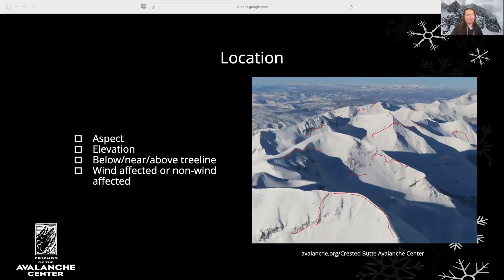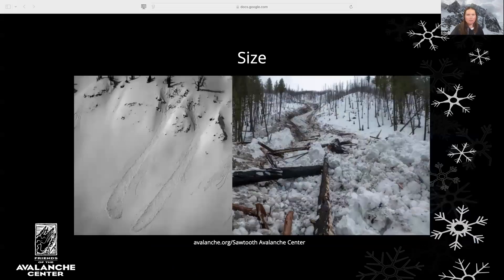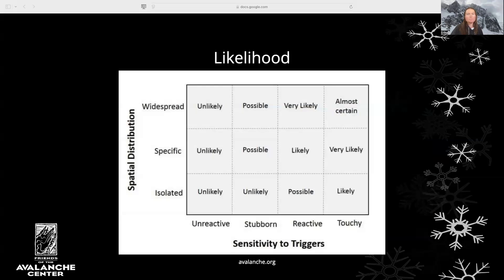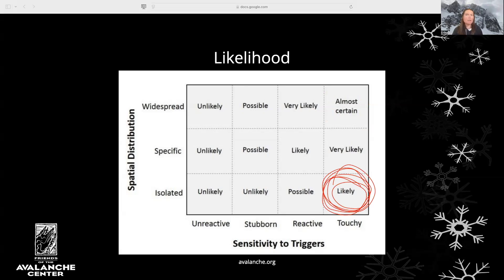Location describes where we expect to find avalanches in the terrain. This includes aspect, elevation, location in relation to treeline, and location where the wind has loaded or stripped a slope. Avalanches can vary widely in size, from small to large to very large. Even small avalanches can be dangerous if you're in consequential terrain. The likelihood of triggering an avalanche varies day to day and even hour to hour. Likelihood is defined by the ease of triggering and the number of possible trigger points in the terrain. If an avalanche is really easy to trigger and there are tons of trigger points in the terrain, then you're very likely to trigger an avalanche; but if it's easy to trigger but you have to hit the right trigger point, your likelihood of triggering goes down.